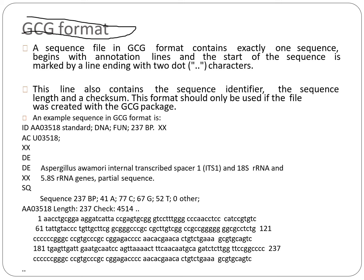Now let's talk about the GCG format. A sequence file in GCG contains exactly one sequence. It begins with notation lines, and the start of the sequence is marked by a line ending with two dots. It starts with the word 'SQ', similar to the EMBL format, and ends with two dots. It cannot contain multiple sequences.